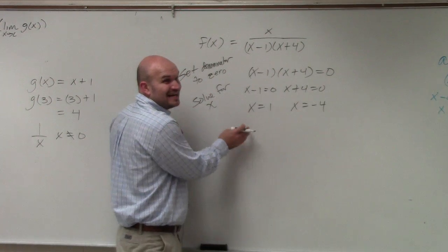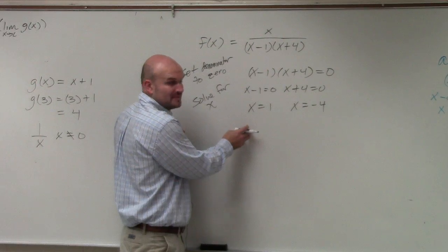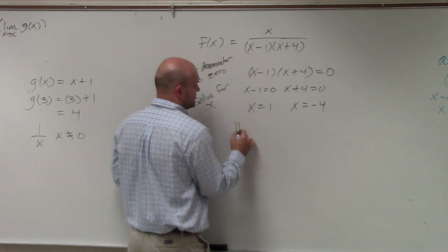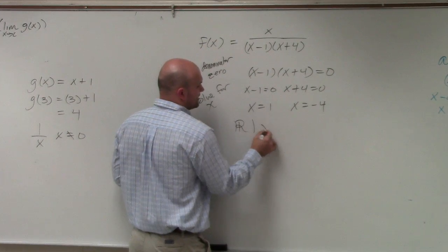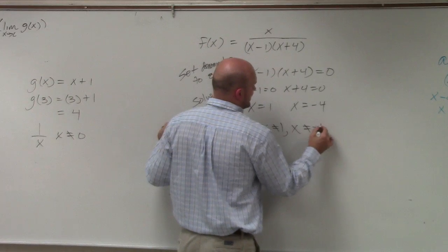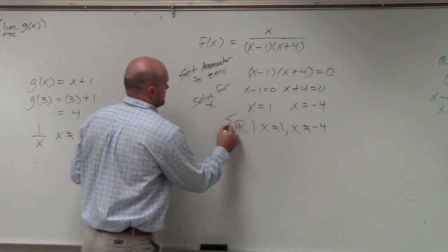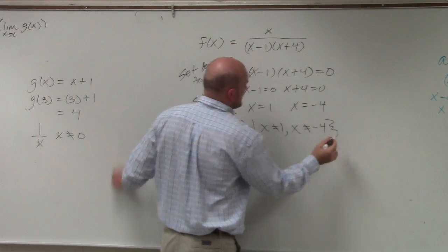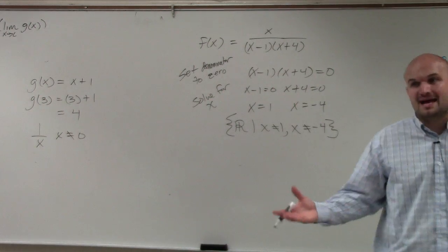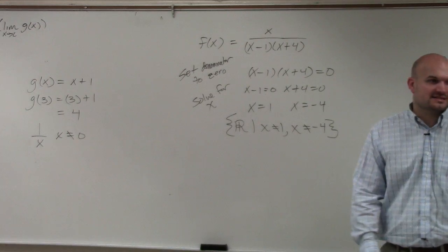OK, so in algebra 2, a lot of times we'd say all real numbers, such that x cannot equal 1 and x cannot equal negative 4. And that was one way to write domain, we'd say it's all real numbers, but x can't equal 1 and x can't equal negative 4.